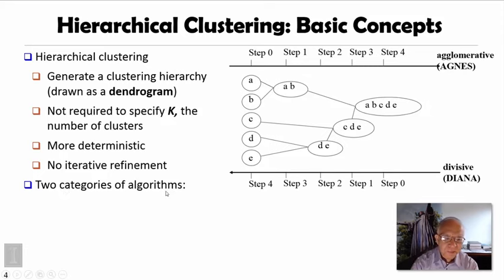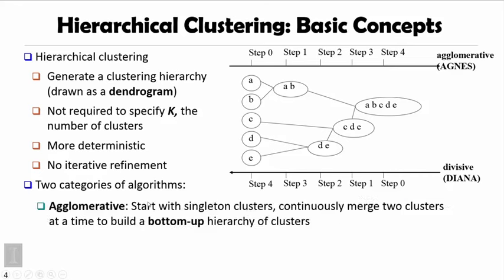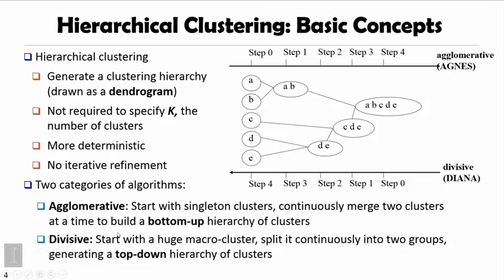Hierarchical clustering methods have two categories of algorithms. One is called agglomerative: it starts with singleton clusters and continuously merges two clusters at a time to build a bottom-up hierarchy of clusters. The second category is called divisive methods: it starts with a huge macro cluster, then splits them continuously into two groups, generating a top-down hierarchy of clusters.